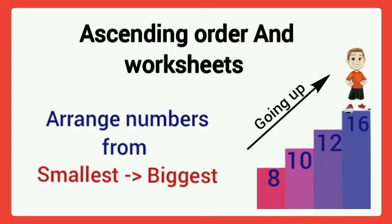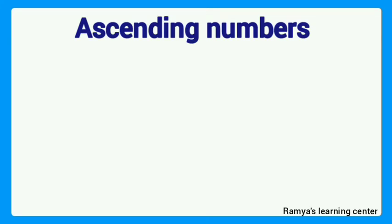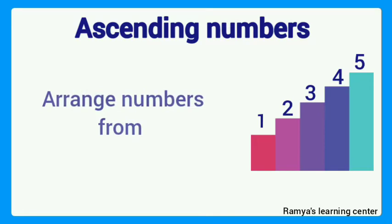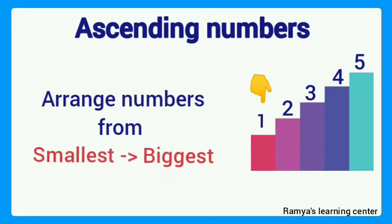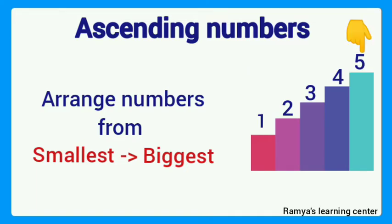Hi kids, today we learn about ascending numbers and do some worksheet also. What is ascending numbers? Arrange numbers from smallest to biggest. Here we can see that the numbers are moving from downstairs to upstairs — the numbers are in increasing order.